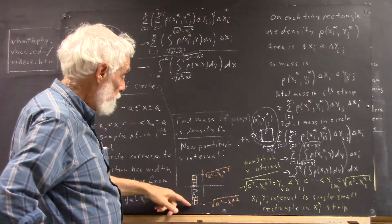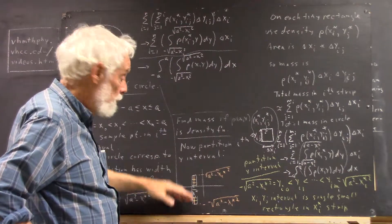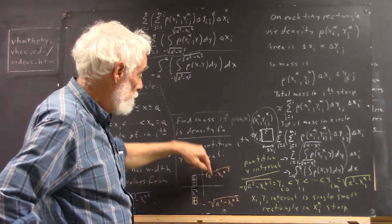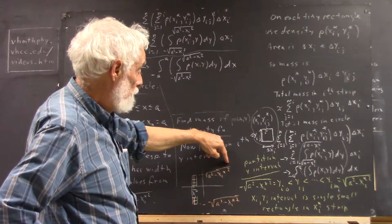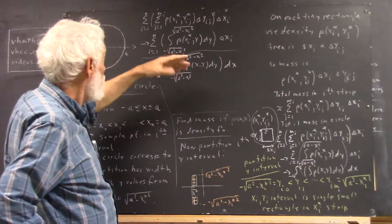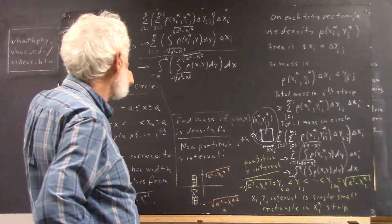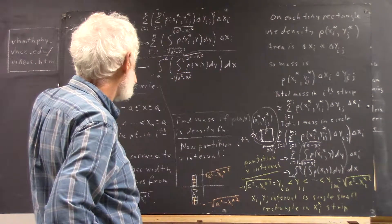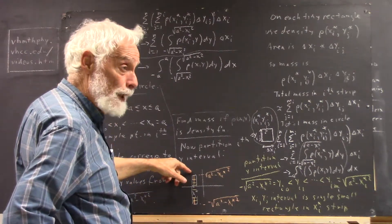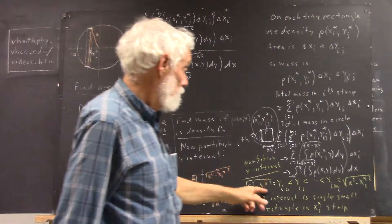Within the partition, we partition our y-values from negative square root of a squared minus xi squared to square root of a squared minus xi star squared. And we're going to then partition it into m sub i sub-intervals of this type.